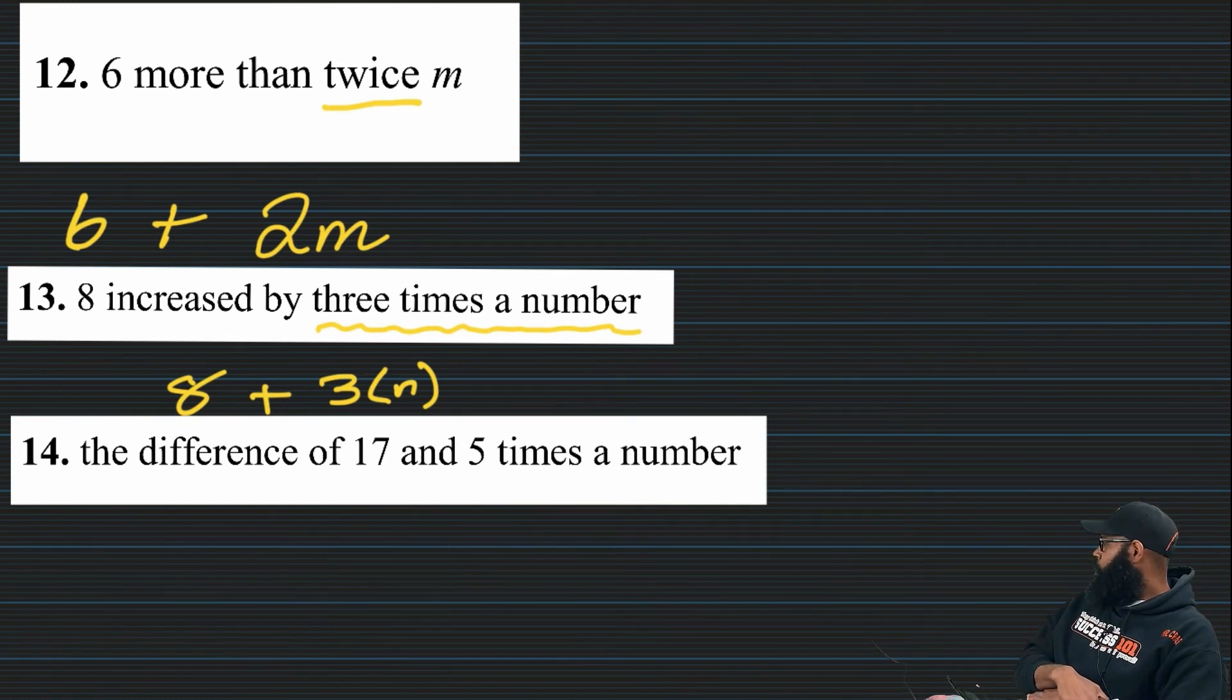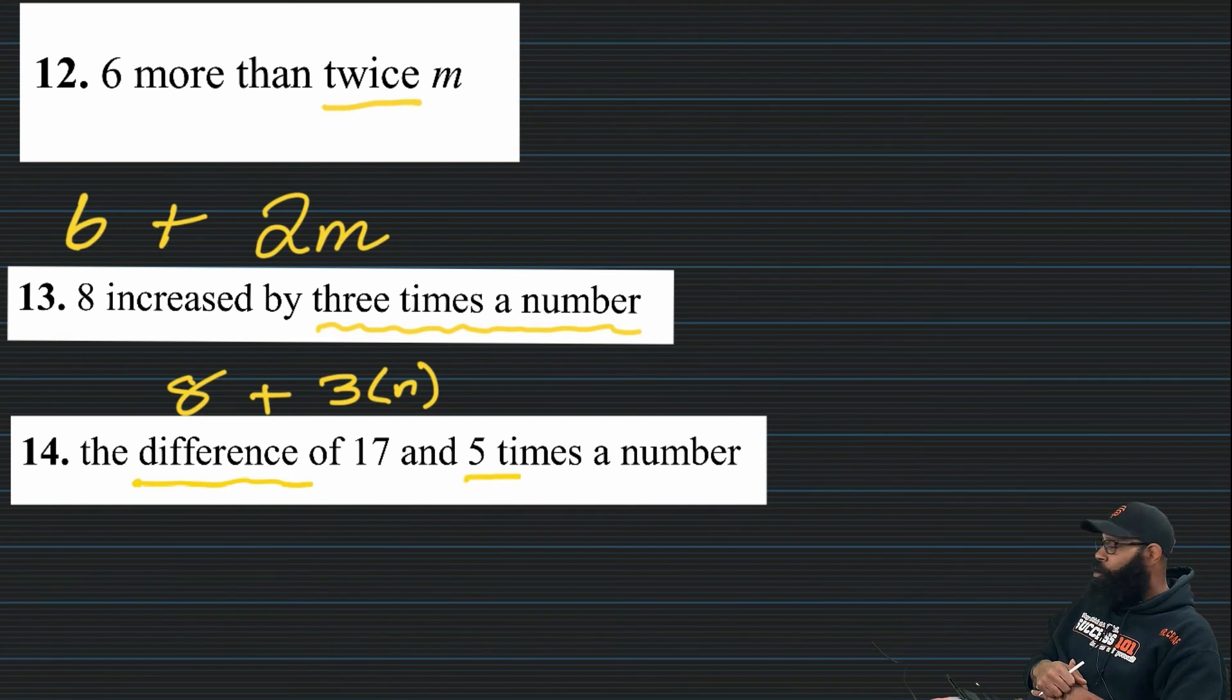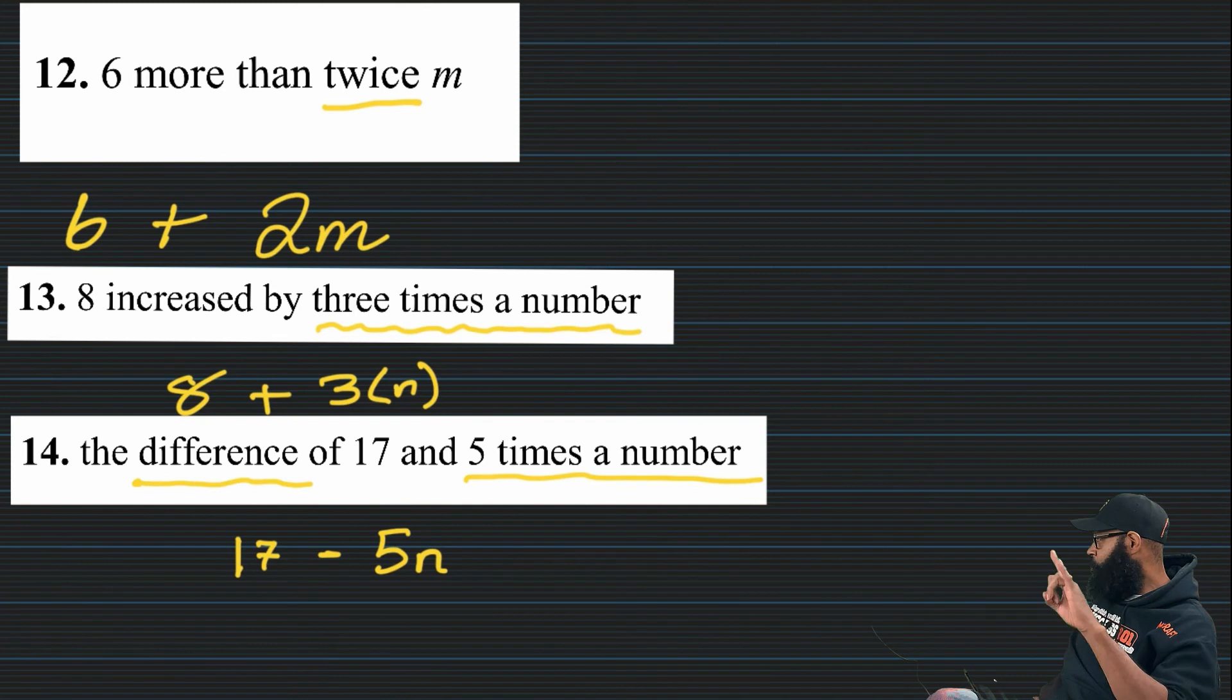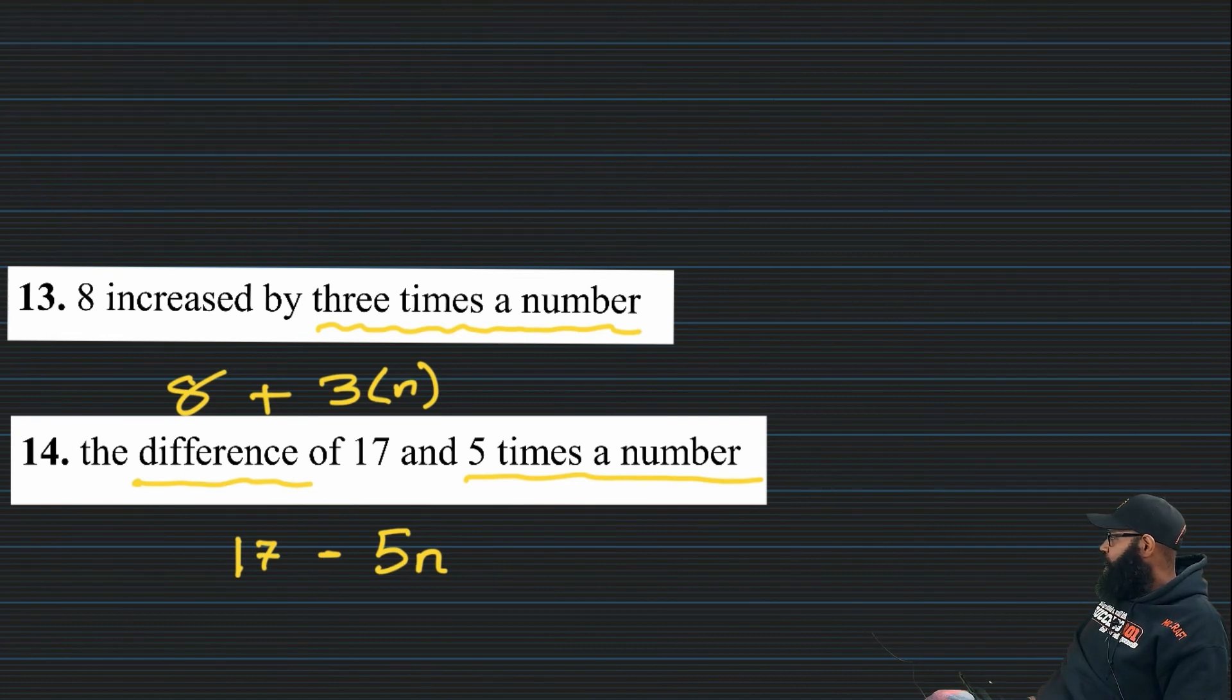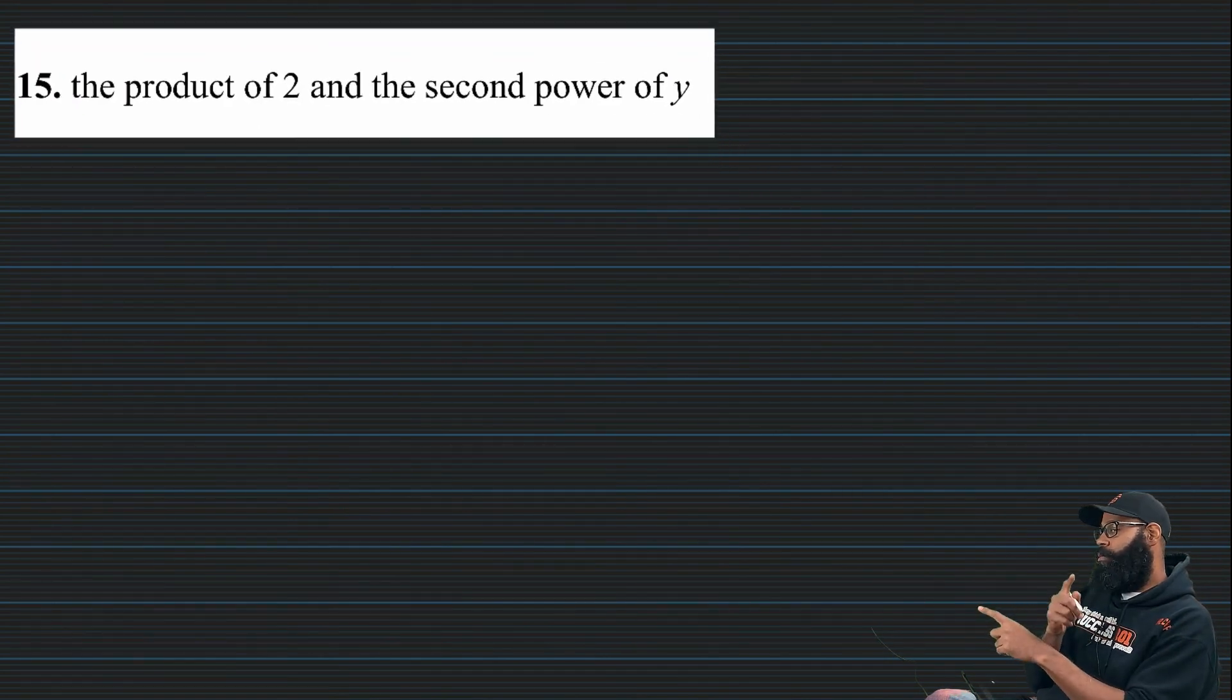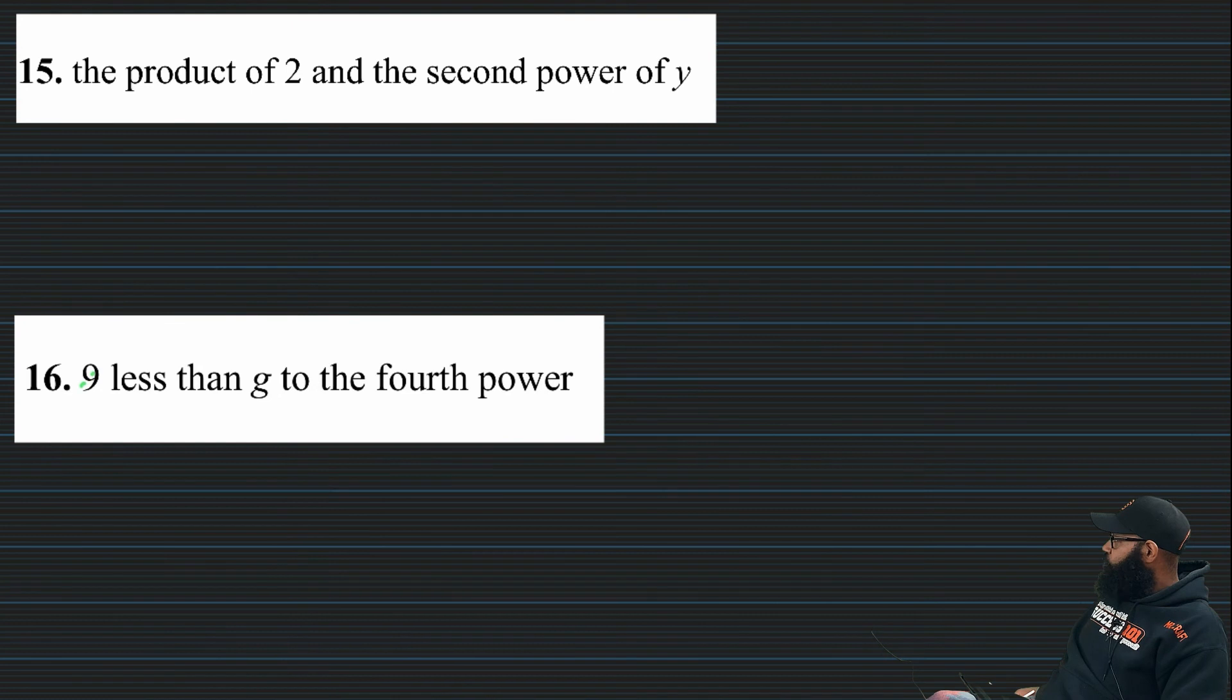Number fourteen. The difference of seventeen and five times a number. We already know we recognize the word difference as subtraction. And we also recognize times a number as multiplication. So we have two operations happening here, right? Understanding our basic operations. And I see my subtraction, I see my multiplication. And this time guys, being careful. You can't swap it. Given its subtraction. All right, let's knock out fifteen and sixteen.